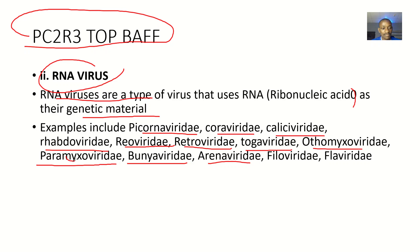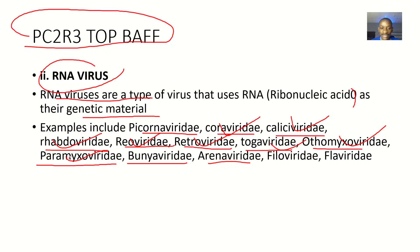Connecting the mnemonic PC²R³ TOP BATH: P stands for Paramyxoviridae. The first C stands for Coronaviridae. The second C stands for Caliciviridae. R³ — the first R is Reoviridae, the second R is Retroviridae, the third R is Rhabdoviridae. For TOP BATH: T is Togaviridae, O is Orthomyxoviridae, P is Picornaviridae, B is Bunyaviridae, A is Arenaviridae, F is Filoviridae, and the last F is Flaviviridae.